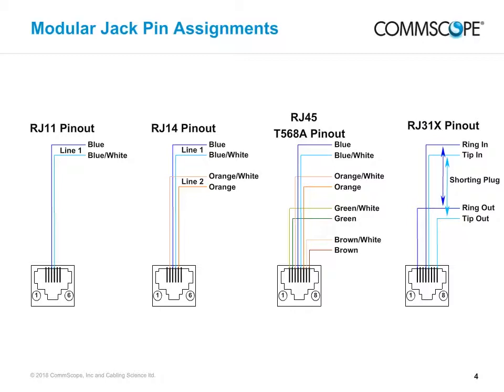RJ45 jacks are required for LAN connections and are sometimes called data jacks. The RJ31X jack has space for eight connections, four pairs, but connects to only two pairs — the inner pair, pins 4 and 5, and the outermost pair, pins 1 and 8. This is a special purpose jack used for security system connections, allowing the security system to seize the line and make an alarm call. It must be used only for a security system, and if no security system is present, the shorting plug must be inserted. If nothing is plugged into the RJ31X jack, the phone line will not connect to the rest of the house wiring and no phones will work. These are sometimes called security or alarm jacks.